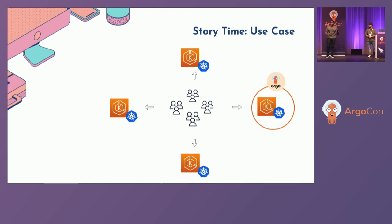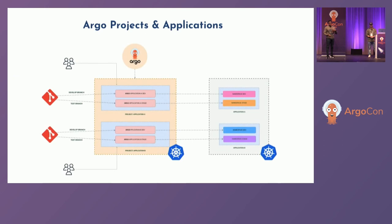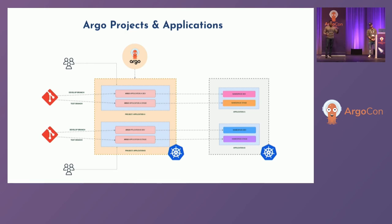Argo CD managed continuous delivery to different workloads. When it came to multi-tenancy, Argo CD helped us significantly — the concepts of projects and applications allowed us to carefully organize the different environments for our applications and group them into projects. This allowed us to easily scale for future workloads being onboarded. As time went on, there were also more cluster personas — solution architects, QA testers — and Argo CD's concepts around projects, applications, and RBAC really complemented that.